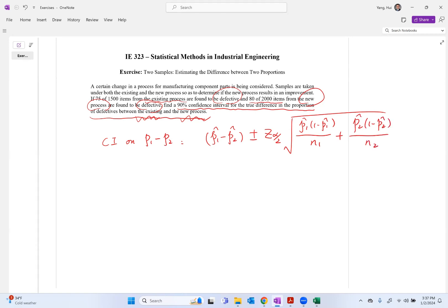So 90% confidence interval means 100 times 1 minus alpha percent equals 90%, so we got alpha equals to 0.1 and alpha over 2 will be 0.05. So z alpha over 2 is z 0.05, which is 1.645.